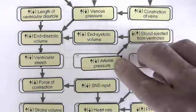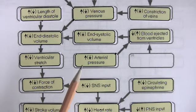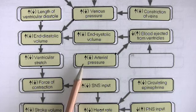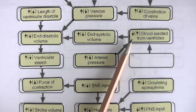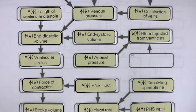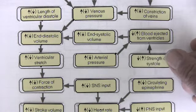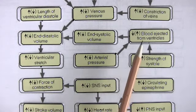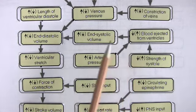One is arterial pressure. If arterial pressure increases, this decreases the difference in pressure between ventricles and arteries and leads to a decrease in blood ejected from the ventricles. The other factor is a decrease in the strength of systole. If the strength of systole decreases, less blood is ejected from the ventricles.